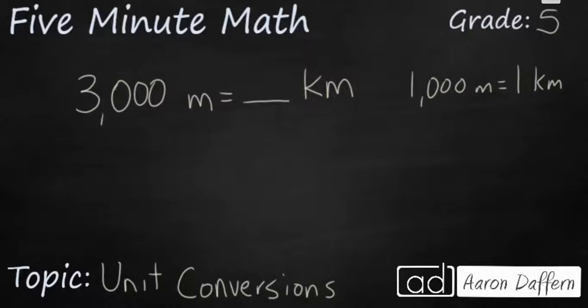and then you need to know whether you're going from a larger to a smaller or smaller to a larger. In this case our meter is the smaller unit because 1,000 of the meters makes up simply one kilometer. So we're going from small to large.